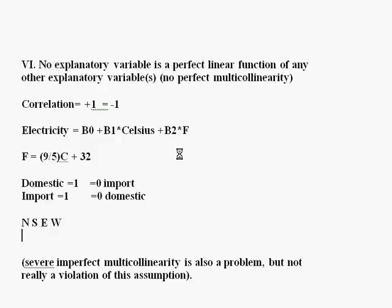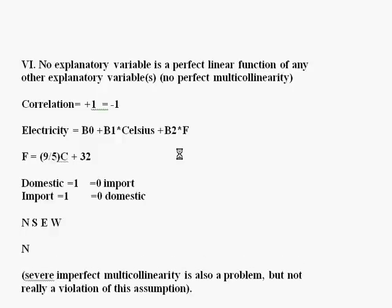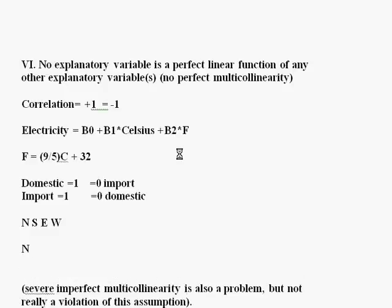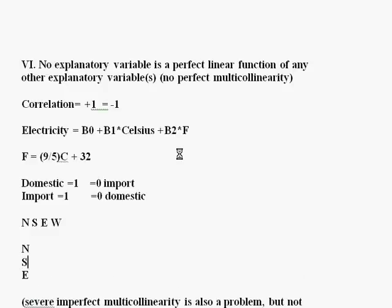Why not? Well, if we have one dummy variable called north, another one called east, and another one called south, if you know that an observation is not from the northern region, that's equal to zero, and it's not from the southern region, that's equal to zero, and you know that it's not from the eastern region, well, you know where the observation came from. It has to have come from the western region.